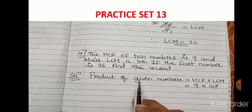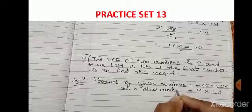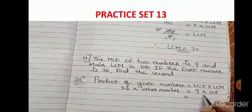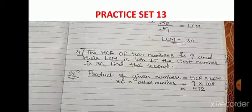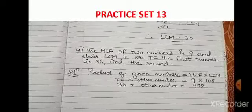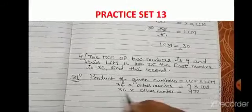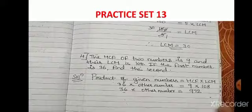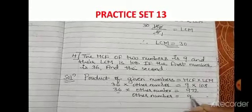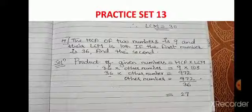We multiply the right hand side: 9 × 108 = 972. So 36 × second number = 972. To find the second number, take 36 to the right hand side — multiplication becomes division: second number = 972 ÷ 36 = 27. The second number is 27.